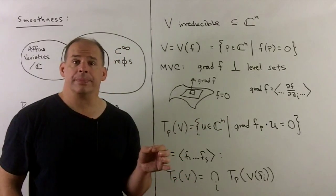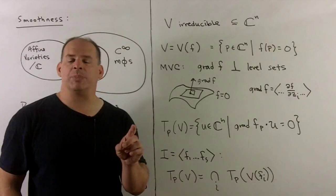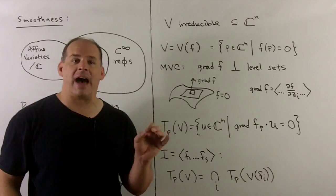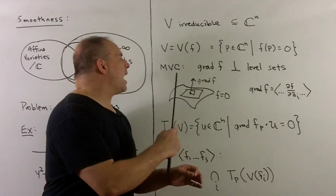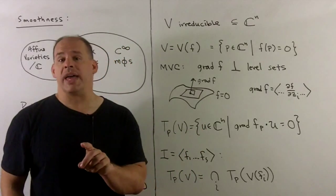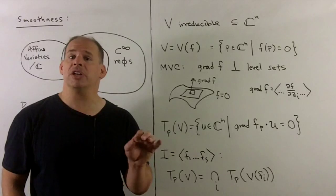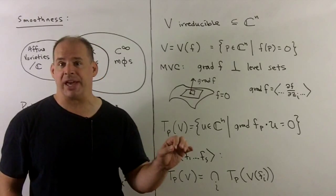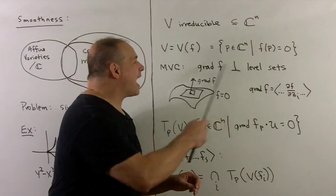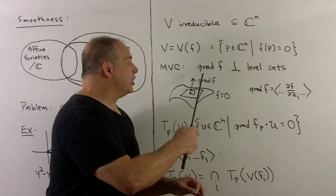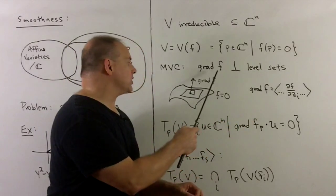If we go back to multivariable calculus, we can define tangent spaces there when we have implicitly defined functions just by looking at the gradient. A multivariable calculus result was that the gradient of our function is always perpendicular to the level sets.